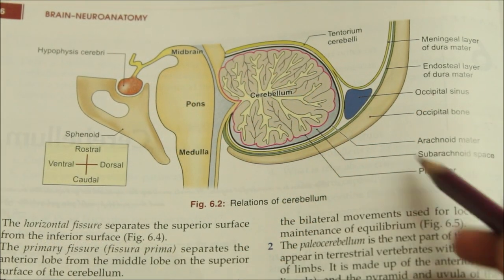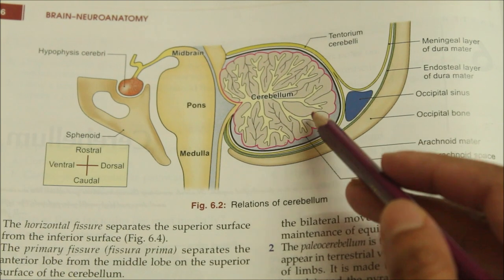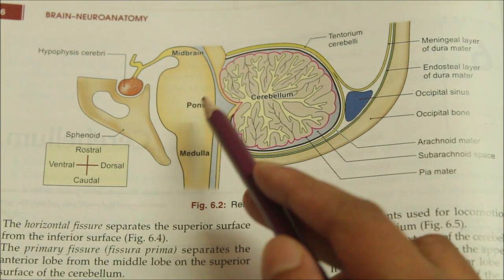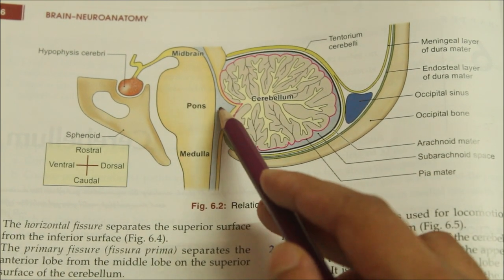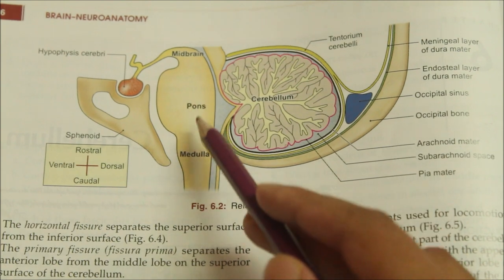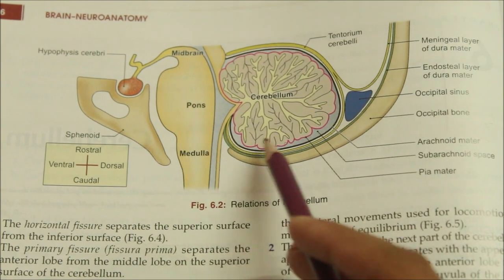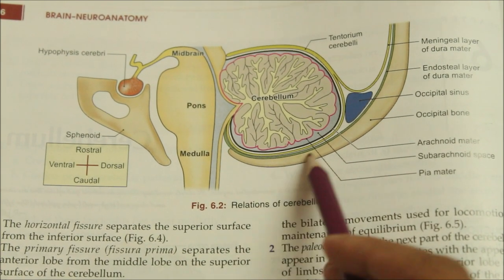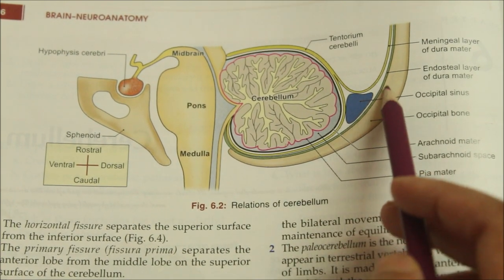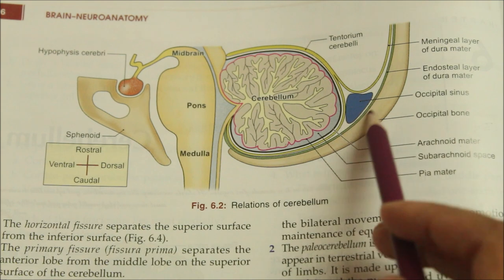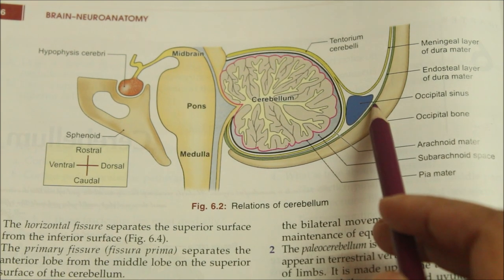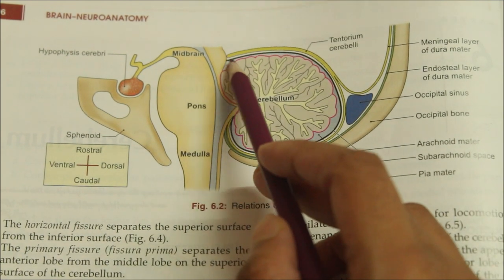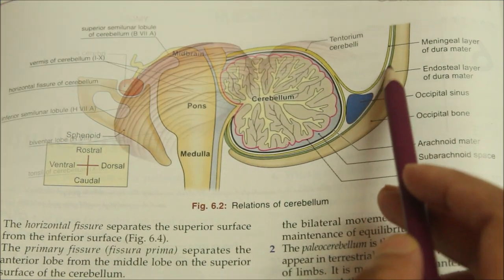Moving on to the relations of the cerebellum: anteriorly it is related to the fourth ventricle, the pons and the medulla. Postero-inferiorly it is related to the squamous occipital bone, and superiorly it is related to the tentorium cerebelli.